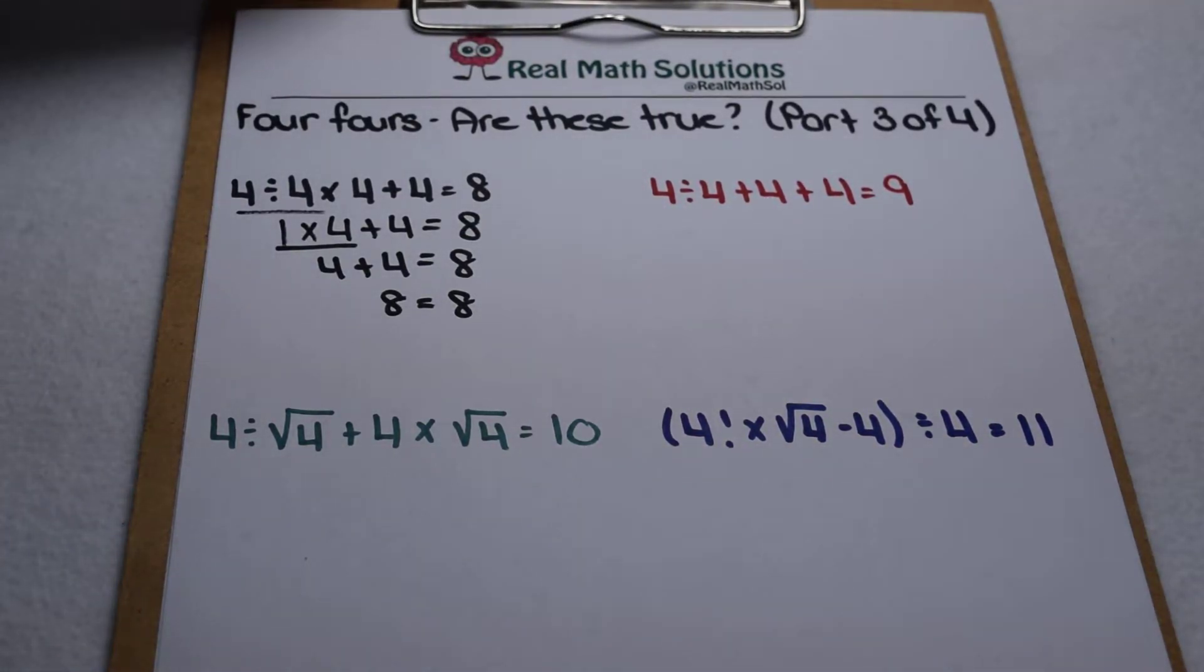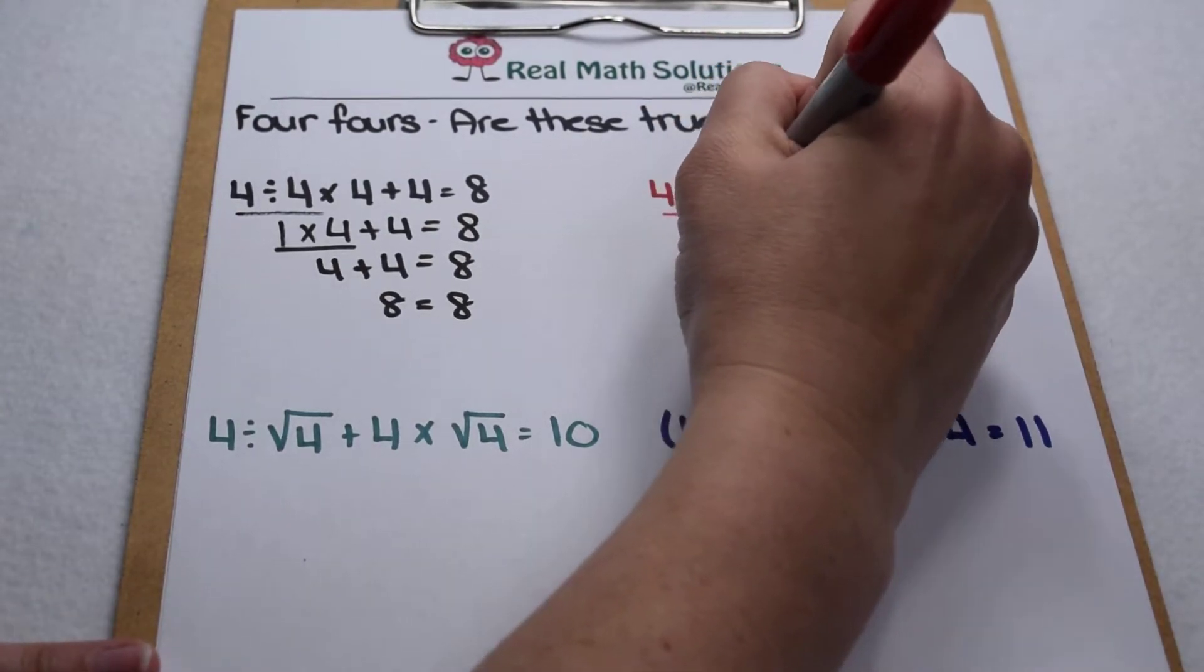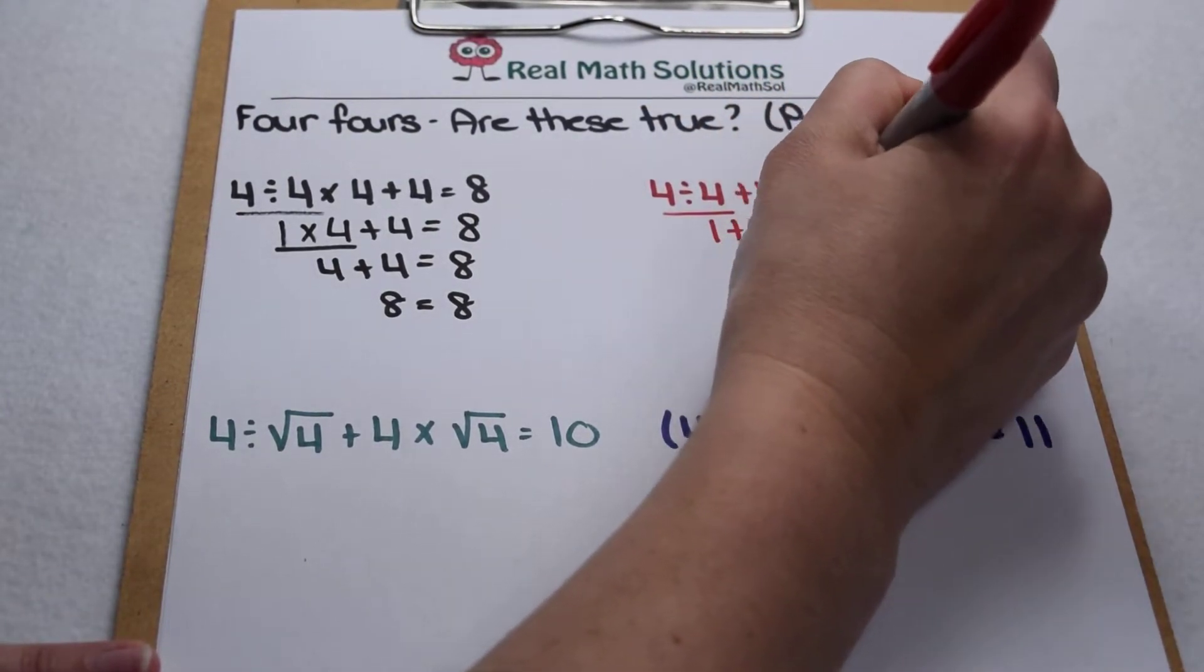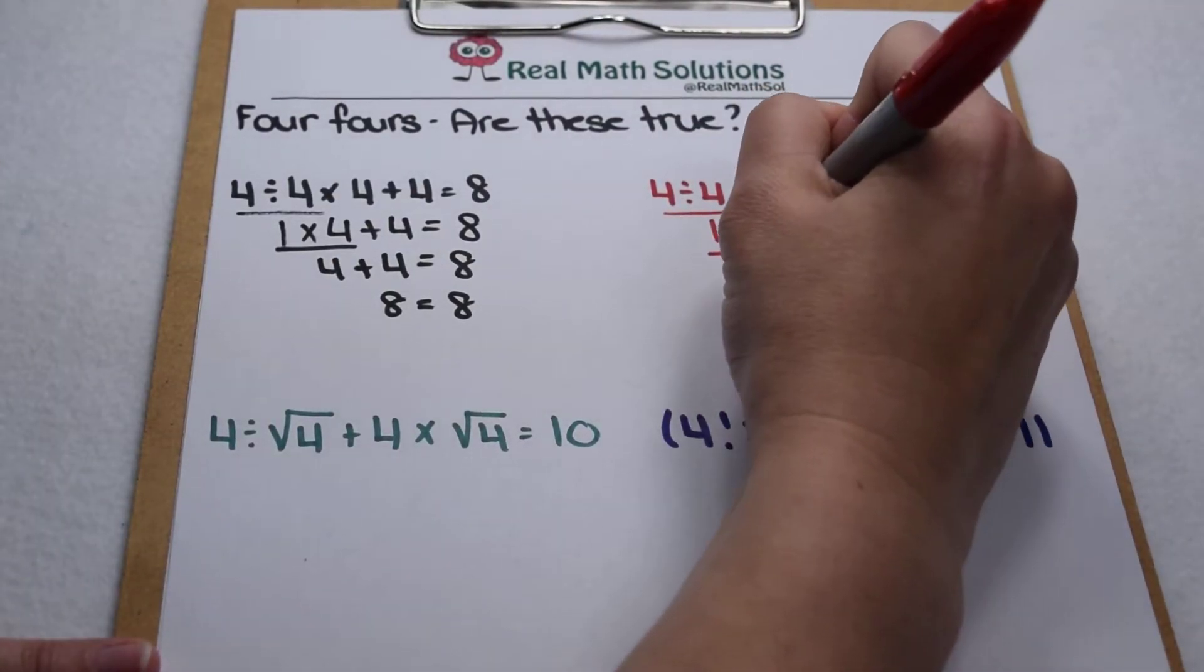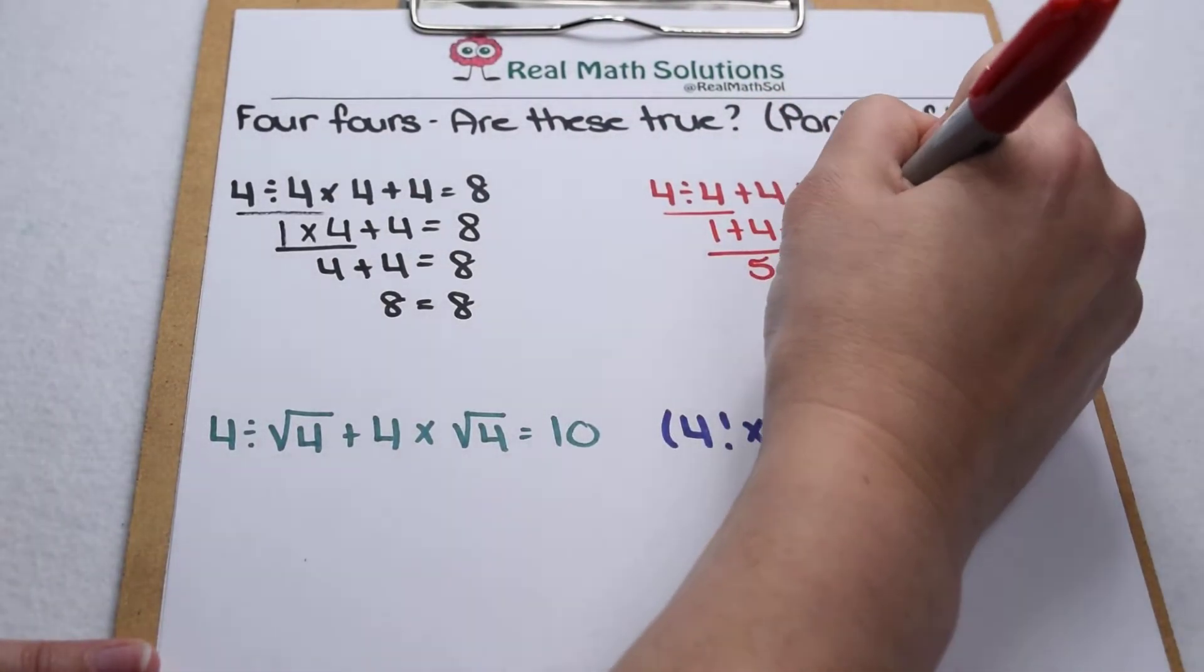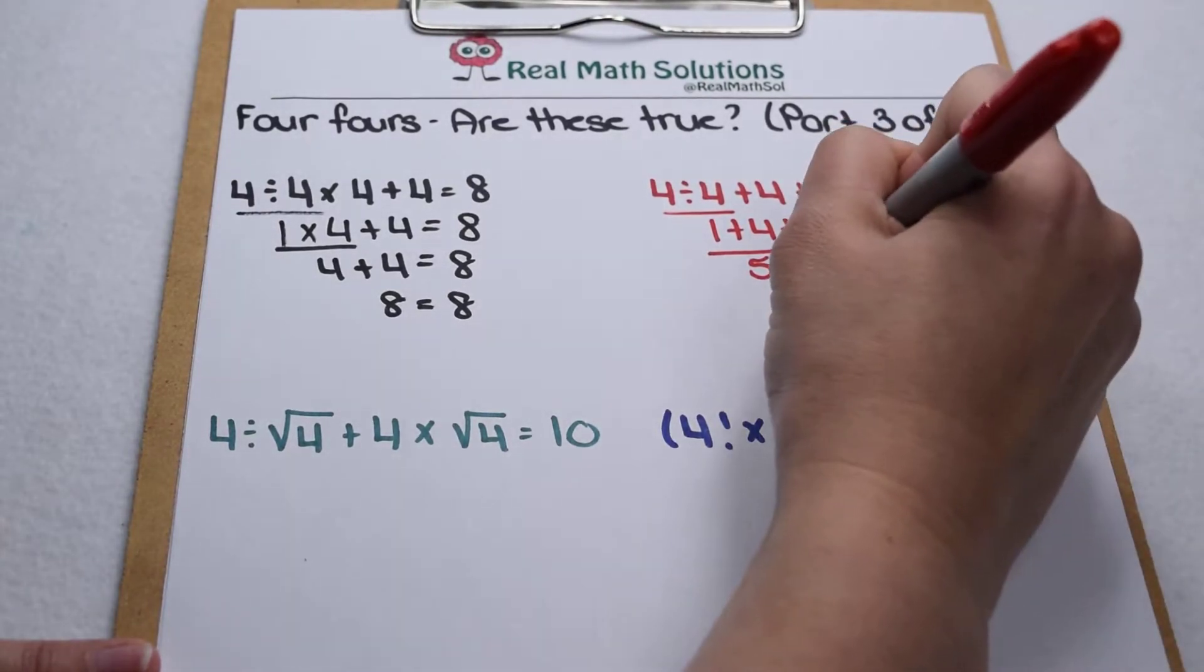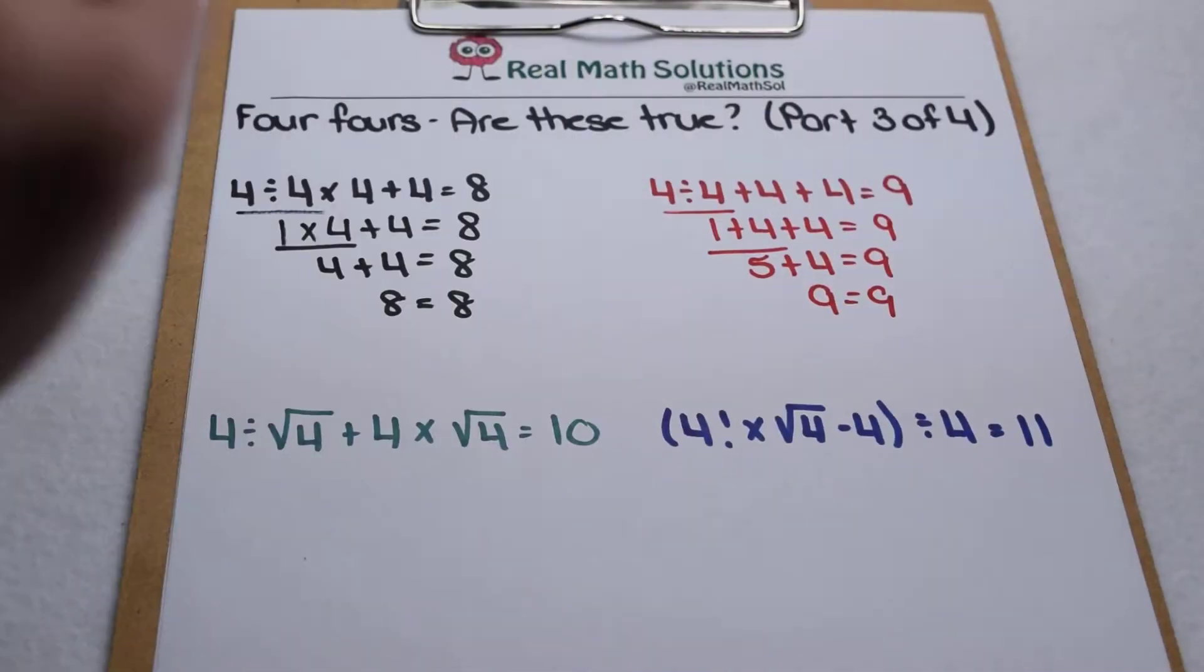For 9, we're going to start out with 4 divided by 4. 4 divided by 4 is 1, plus 4 plus 4 equals 9. So work our addition left to right, 1 plus 4 is 5, so that leaves us with 5 plus 4. 5 plus 4 does equal 9, so 9 equals 9.